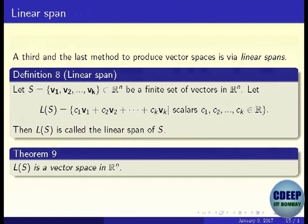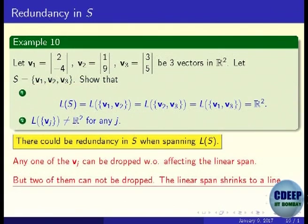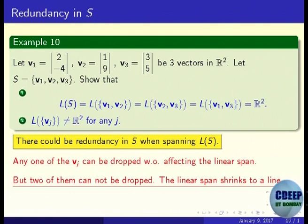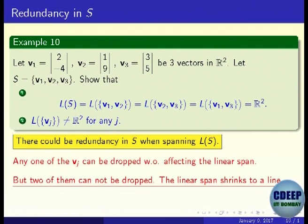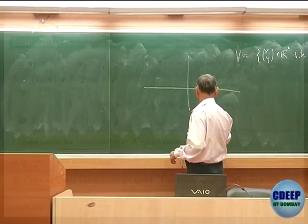Let us look at an example. I have taken three vectors in R²: V₁ = (2,−4), V₂ = (1,9), V₃ = (3,5), and call this set S. The linear span of {V₁, V₂, V₃} is the whole of R². Moreover, the linear span of {V₁, V₂, V₃} equals the linear span of {V₁, V₂}, which equals the linear span of {V₁, V₃} — and all of these equal the whole of R². This means the set S has some redundancy.